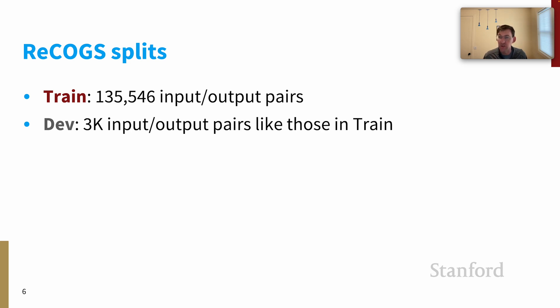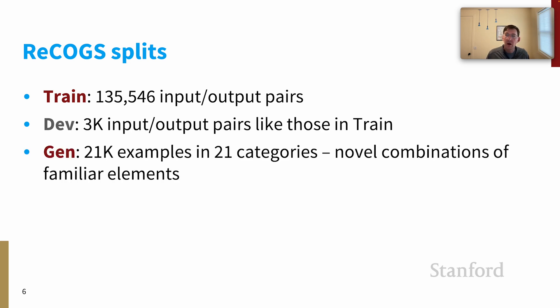We're not going to make much use of the dev split. Our focus is instead on these generalization splits. This is what's so interesting about COGS and ReCOGS. This is 21,000 examples in 21 categories. And the name of the game here is to have novel combinations of familiar elements to really test to see whether models have found compositional solutions to the task.